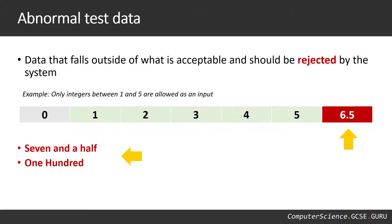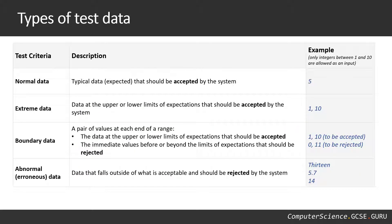To recap: when it's time to test your programs and your validation, and the exam board asks you for typical test data, don't just make up random values. The values you suggest for testing should fall under these categories. You may be asked why you've chosen those values, and the reason is that each fits a specific test data criterion.